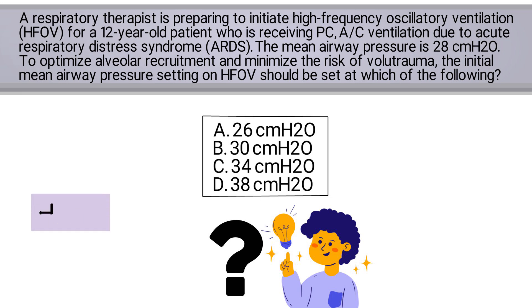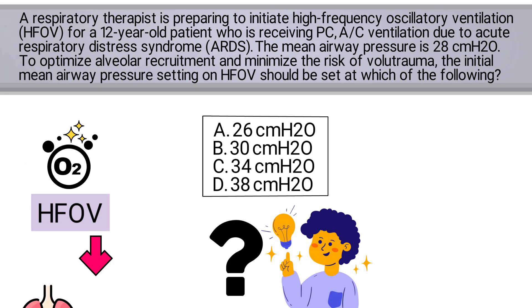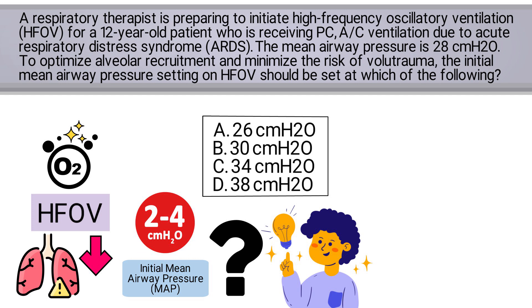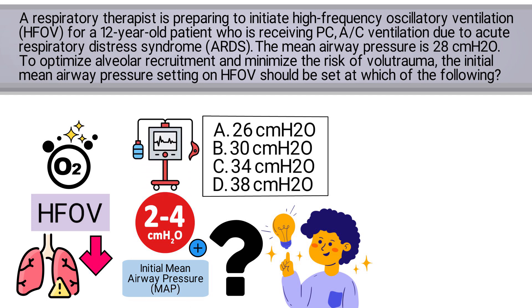In pediatric patients, high frequency oscillatory ventilation is often used to enhance oxygenation while minimizing lung injury. The initial mean airway pressure should typically be set two to four centimeters of water pressure above the MAP on conventional mechanical ventilation — which in this case the question already told us was 28 cmH₂O.